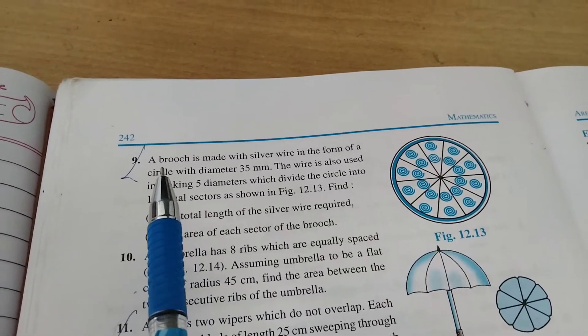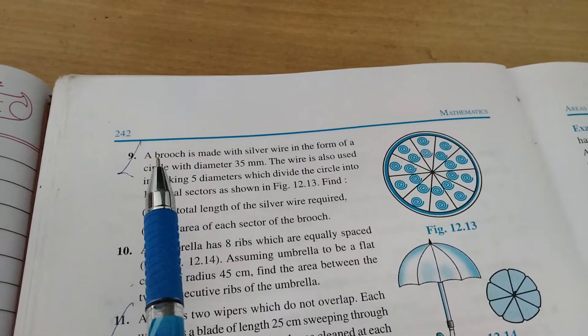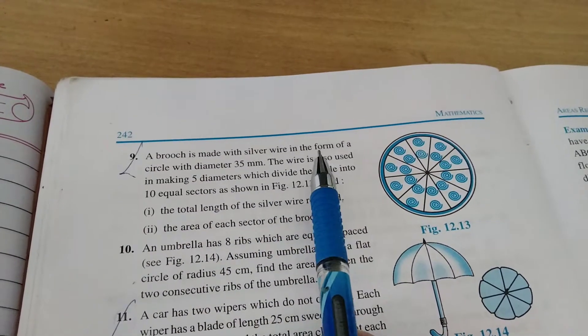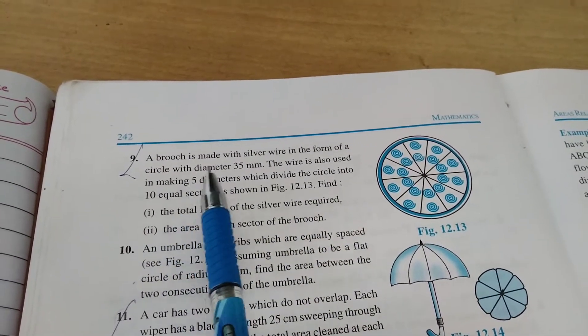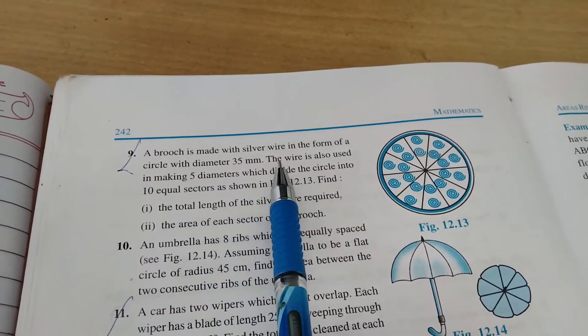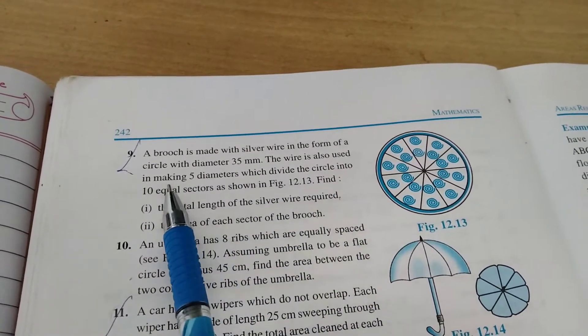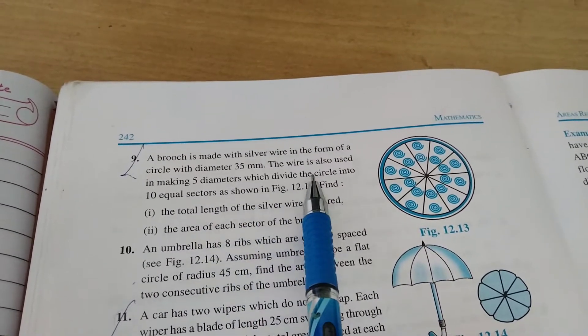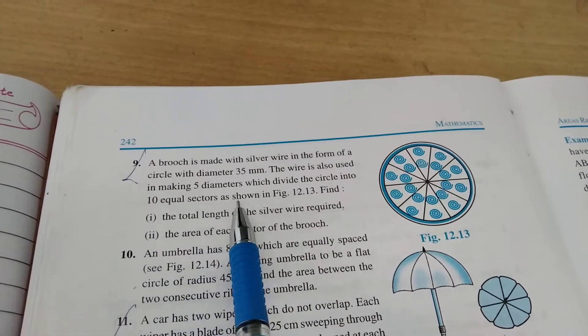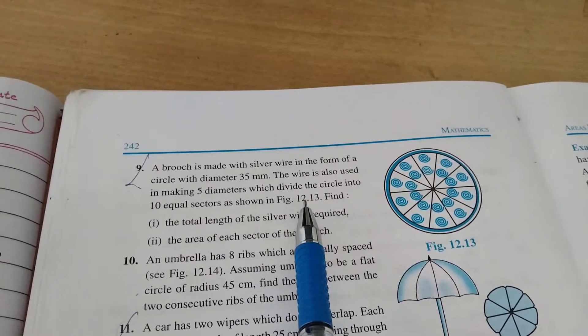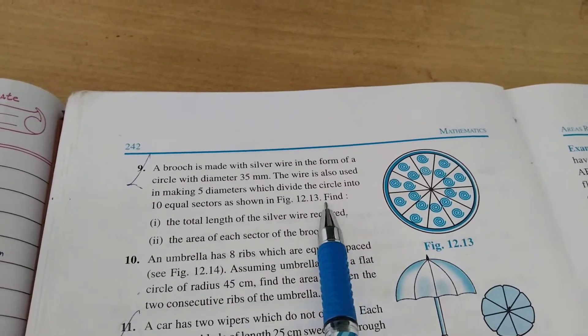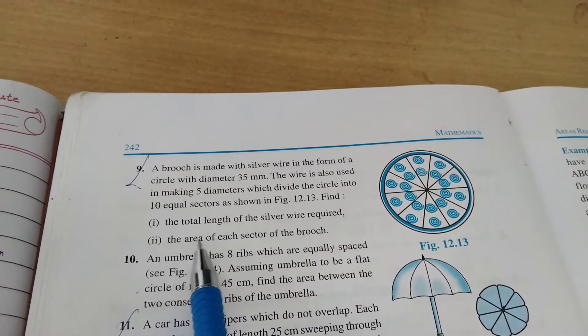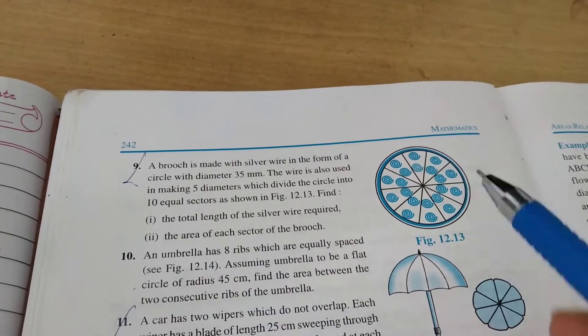Okay, we are going to start question number 9, section 12.2. Your question is: a brooch is made with silver wire in the form of a circle with diameter 35 mm. The wire is also used in making five diameters which divide the circle into 10 equal sectors as shown in figure 12.13. Find: number one, the total length of the silver wire required; number two, the area of each sector of the brooch.